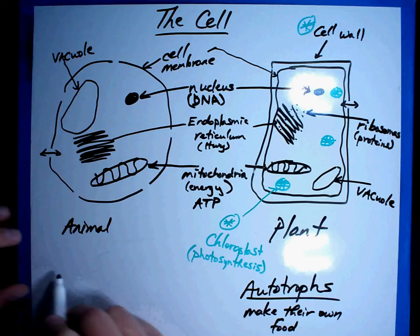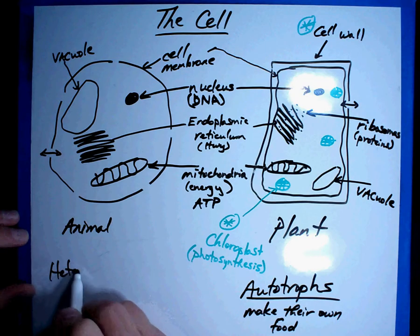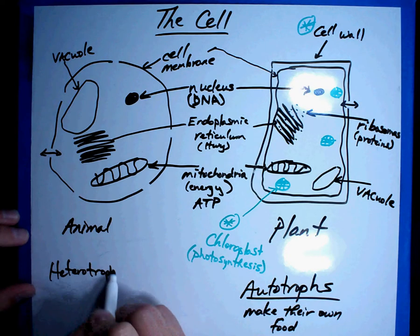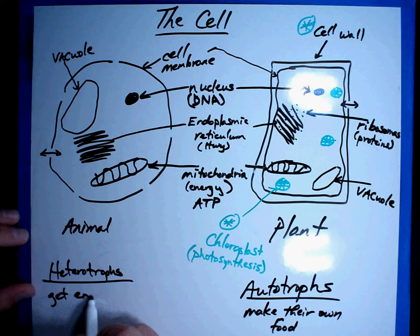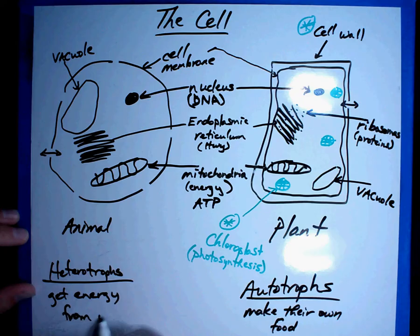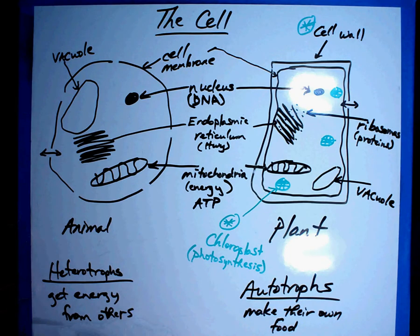Animals aren't like that. Animals are what are called heterotrophs. And those heterotrophs, they get their energy from others. So like in our case, we eat food. And when we eat the food, we get the energy from our food. Plants don't do that.